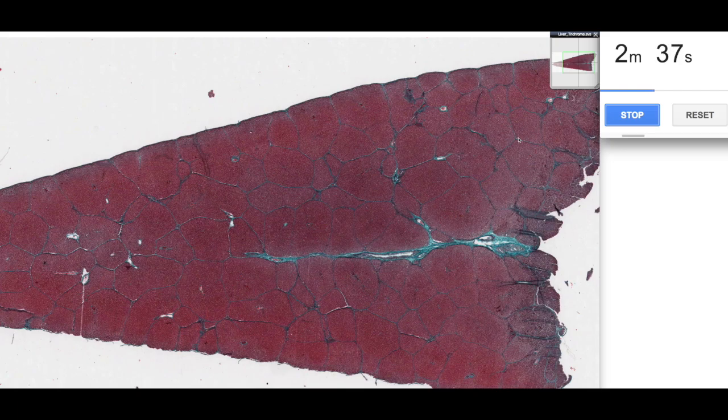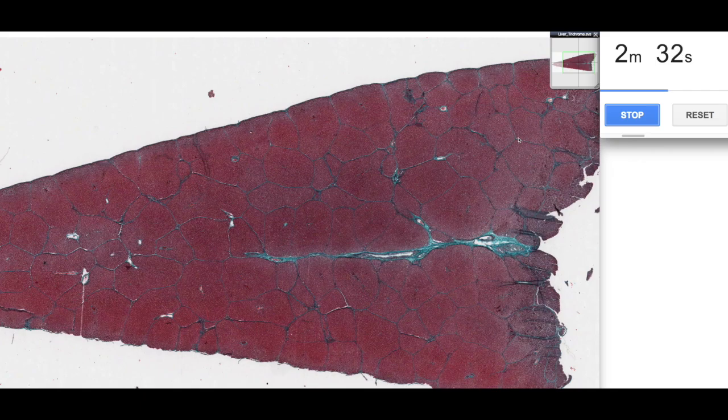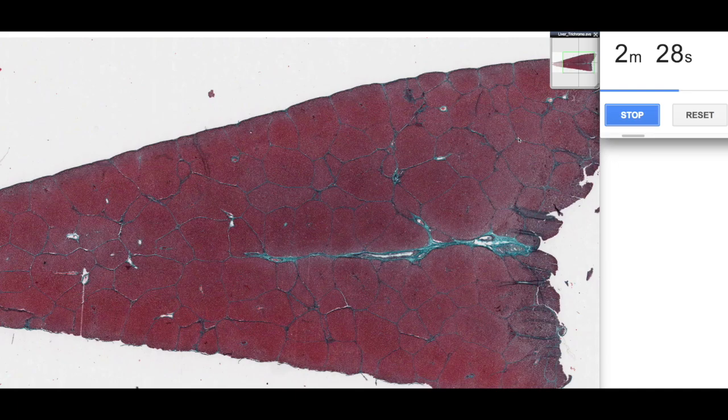And this is a section of the pig liver and we classically use this in histology because they have very well-defined lobules. So a liver is made up of lobes and then those lobes are further subdivided by connective tissue into lobules.